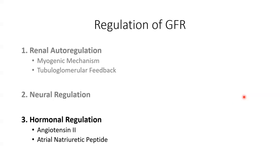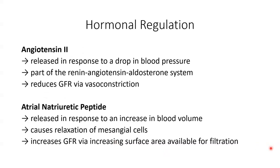The final method by which GFR is regulated is through hormones: angiotensin 2 and atrial natriuretic peptide. Angiotensin 2 reduces GFR, while atrial natriuretic peptide increases GFR. When blood volume and blood pressure decrease, the juxtaglomerular cells secrete the enzyme renin, which activates the renin-angiotensin-aldosterone system, producing angiotensin 2. As a potent vasoconstrictor, angiotensin 2 constricts both the afferent and efferent arterioles, reducing blood flow into the glomerulus, reducing glomerular blood hydrostatic pressure, and reducing GFR.